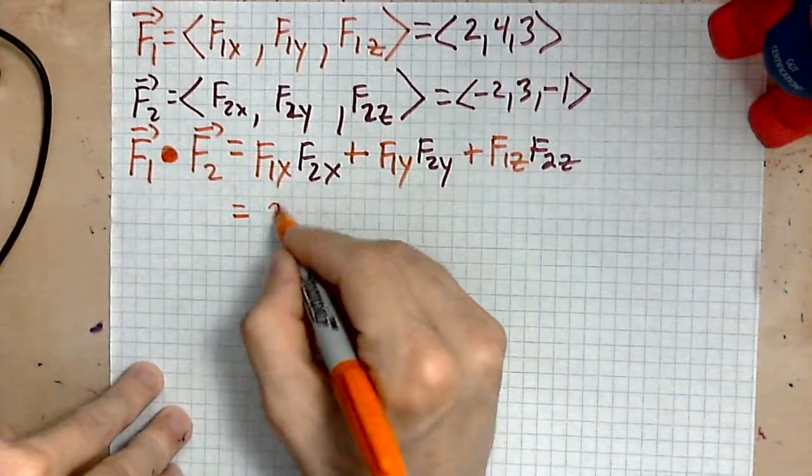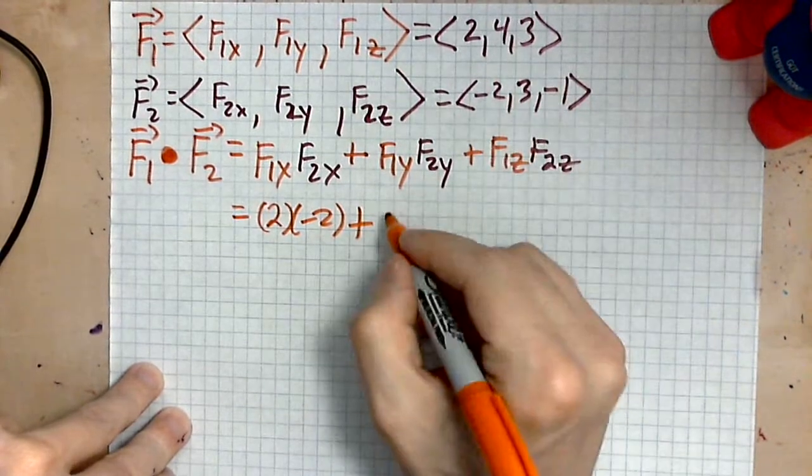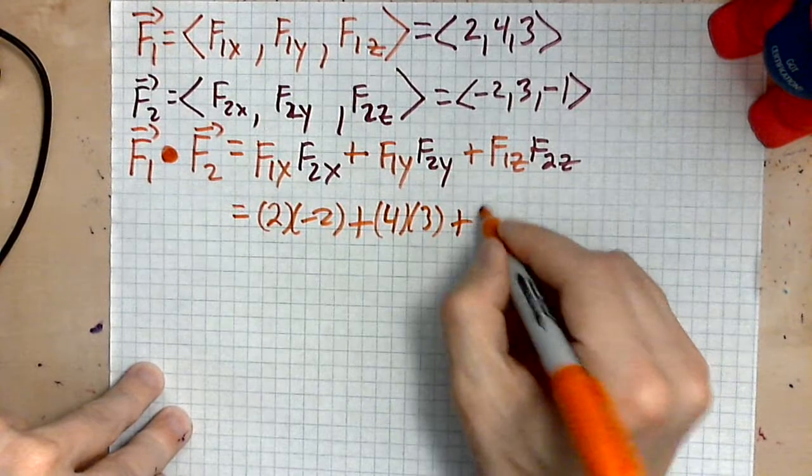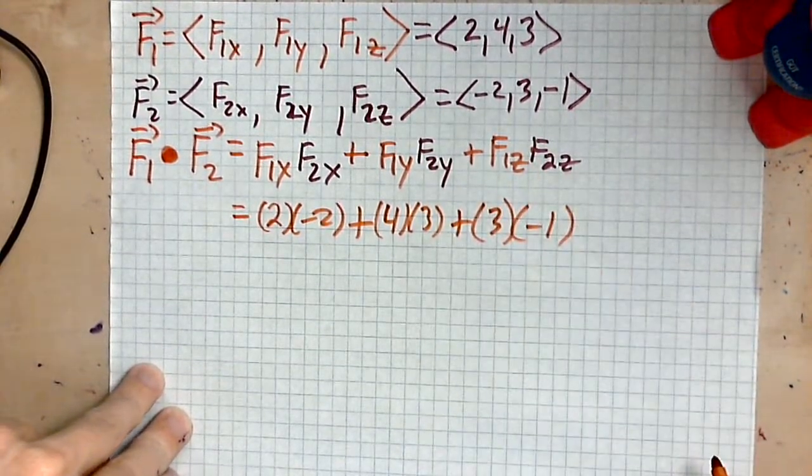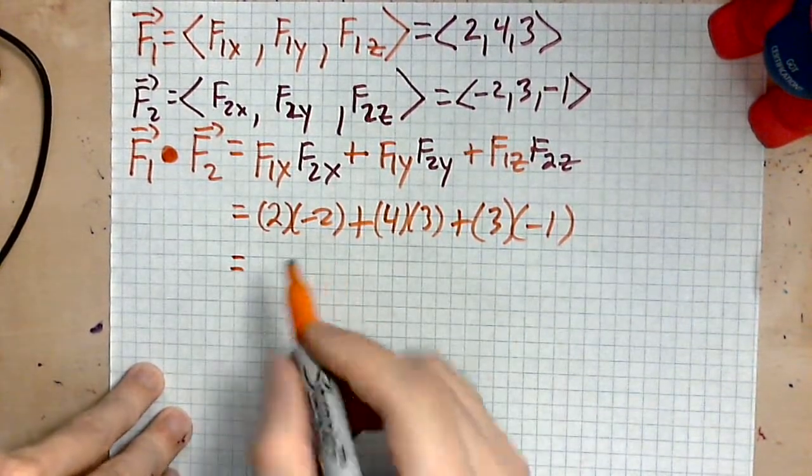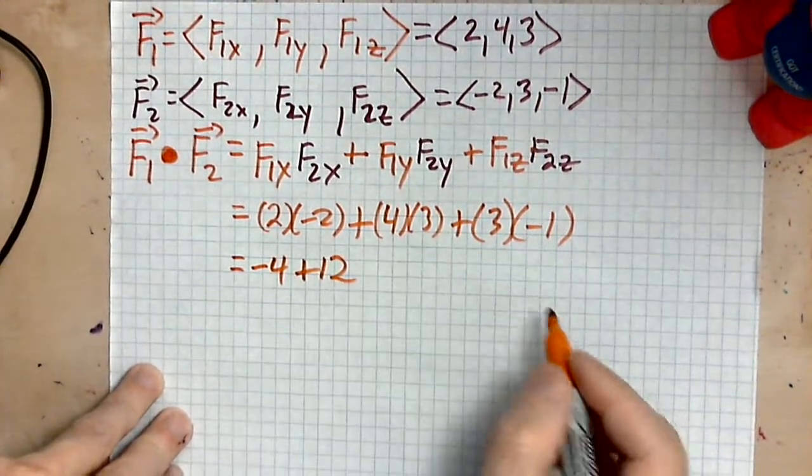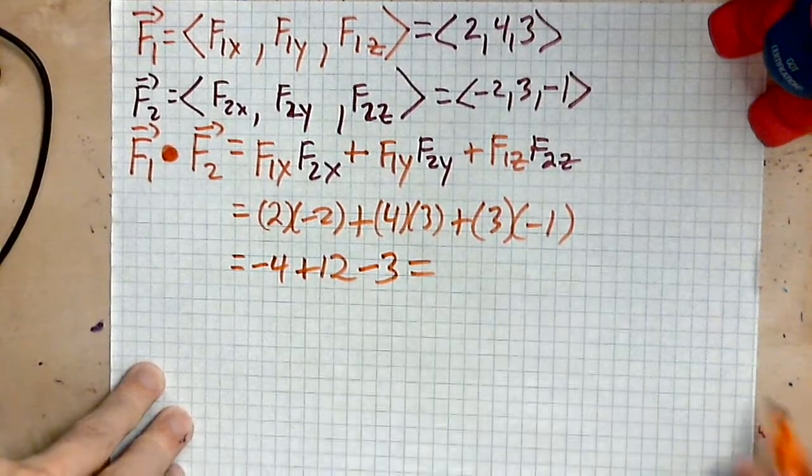2 times negative 2 is the first step. Add to that 4 times 3, and then 3 times negative 1. You are multiplying and adding. Not very deep. 2 times negative 2 is negative 4. 4 times 3 is 12. And then, 3 times negative 1 is negative 3. So let's simplify.